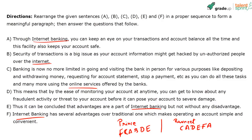Now, which sentence is probably introducing what internet banking is all about? F says 'internet banking has several advantages' — but it's not telling me what internet banking is. C, on the other hand, explains: 'Banking is now no more limited to going and visiting the bank in person for various purposes like depositing and withdrawing money, requesting for account statement, stopping a payment, etc., as you can do all these tasks using online services offered by the bank.' That's an explanation of internet banking — so C is the topic sentence.